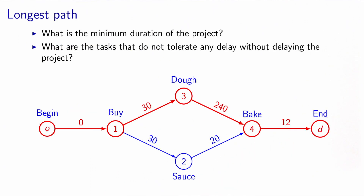Now that we have a network, we can address the two questions: what is the minimum duration of the project, and what are the tasks that do not tolerate any delay? To do that, we calculate the longest path in the network. Note that this network by construction does not contain any cycle, because it is a precedence network. Therefore, the shortest-path algorithm can be used on the network where all costs have their signs changed.